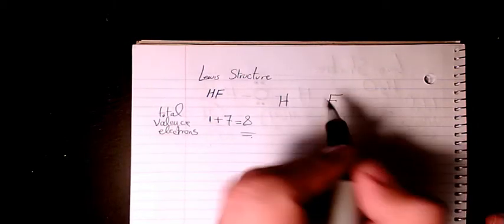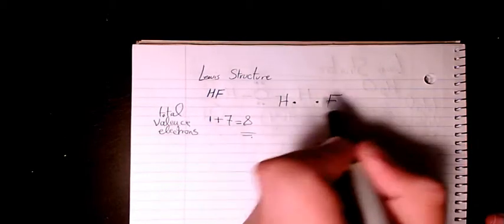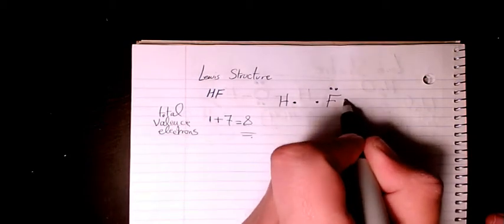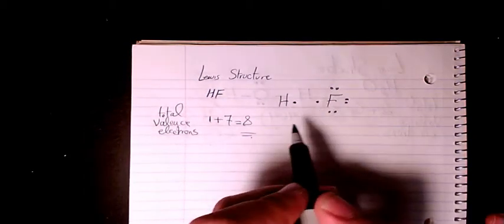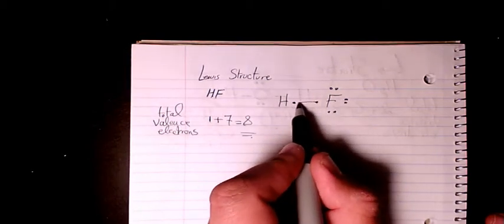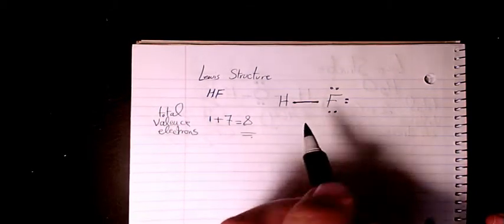Then I will have one here and one here and seven for the fluoride part, and then these two connect to each other and make a bond.